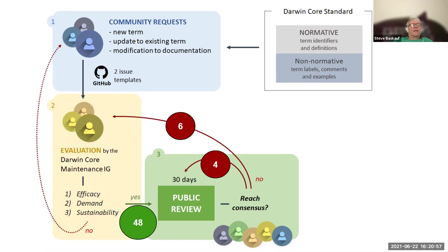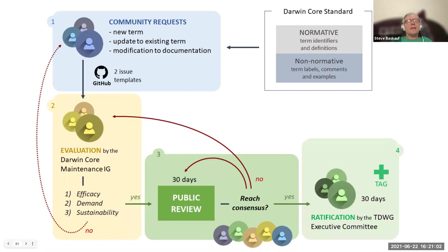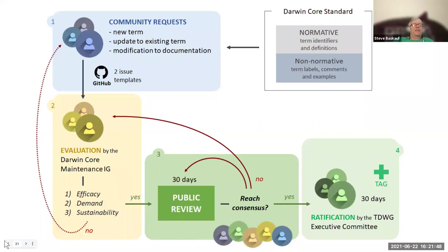Six of the proposals in the public review were recommended for task group resolution. Proposals that do reach consensus become part of the package that the maintenance group prepares for ratification by the TDWG executive committee. Once submitted, the executive committee has 30 days to ensure that due process has been followed and that each proposal satisfies the scrutiny of the technical architecture group. The role of the executive committee at this stage is not to offer new opinions on the content — the opportunity for that is during the public review. The executive committee can ratify none, some, or all of the proposals based on their assessment of how well the process was followed.